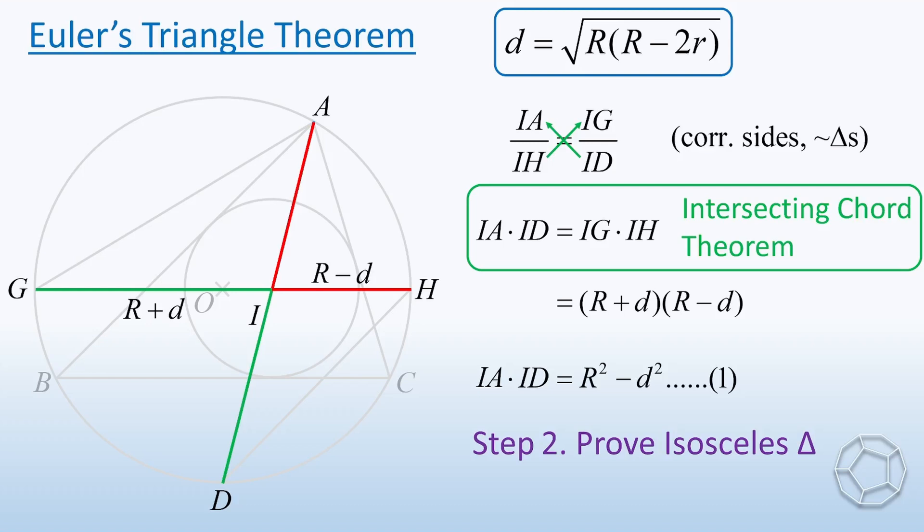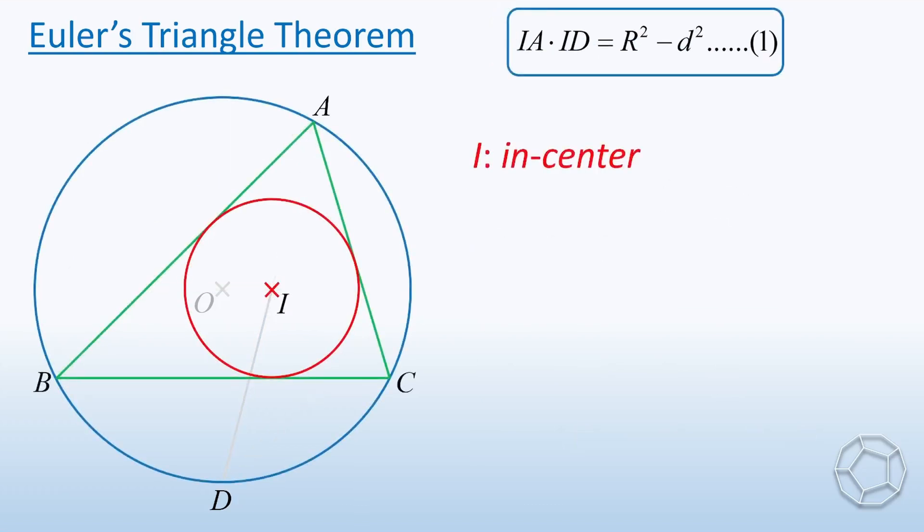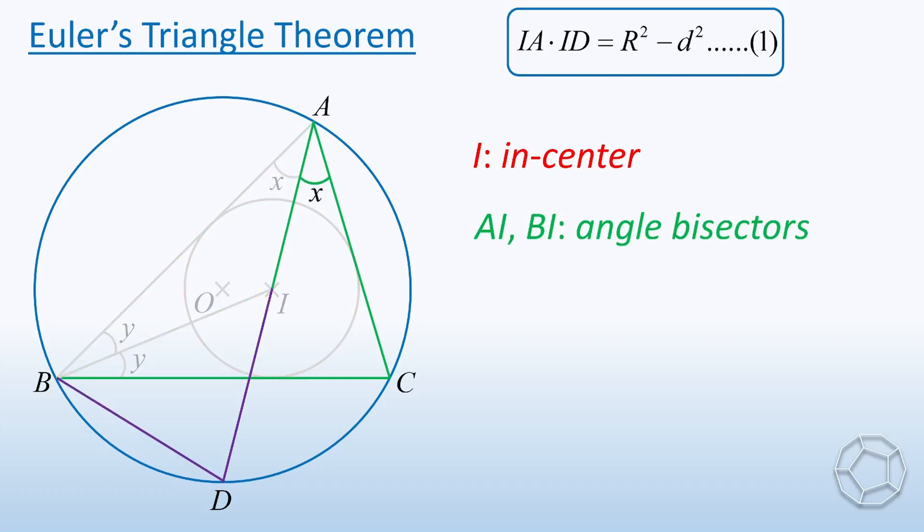We look at the incenter I again. By definition, AI and BI are the angle bisectors of angle A and angle B respectively. The two angles at point A are called X and the two angles at point B are called Y. Let's focus on the purple side DI and construct DB. Then, this angle at B is also X but angles in the same segment.